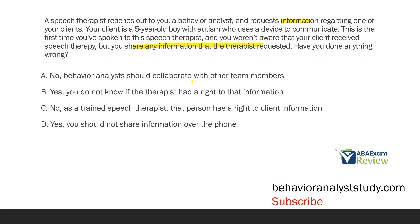Answer B is yes — you do not know if this therapist had a right to that information. You might say they're also a professional who works with the kid, which is true, but we have these protections in place to protect the client. Do no harm. Answer C says no, as a trained speech therapist that person has a right to client information — not necessarily, you have to check with the primary guardian. Answer D says you should not share information over the phone — that's not a hard and fast rule. The biggest issue is you do not know if the therapist had a right to that information. Privacy is there to protect our clients, especially young clients like a five-year-old who can't necessarily protect themselves.